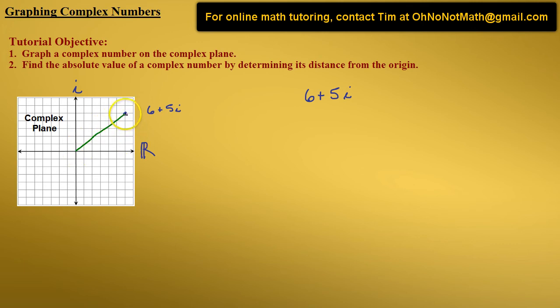So if we drop a line straight down from this point to the real axis, notice that we have a right triangle.